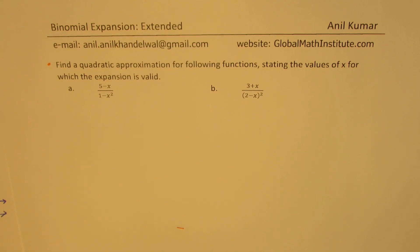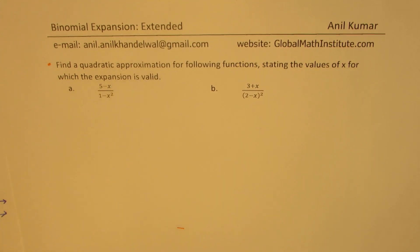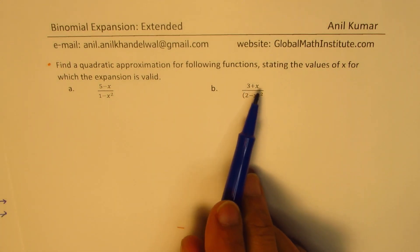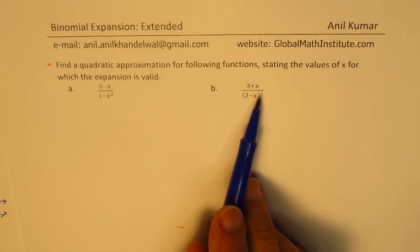I'm Anil Kumar. Welcome to my series on extended form of binomial expansion. We have two related questions in this particular video. The question is: find a quadratic approximation for the following functions, stating the values of x for which the expansion is valid. The two expressions are: 5 minus x over 1 minus x squared, and 3 plus x over 2 minus x, whole squared.